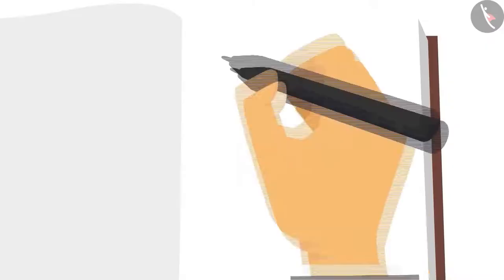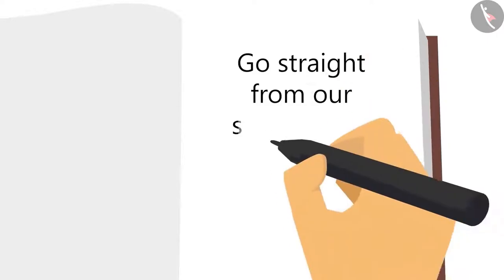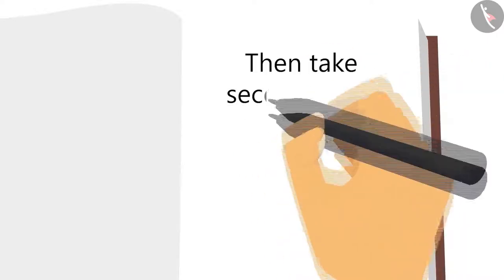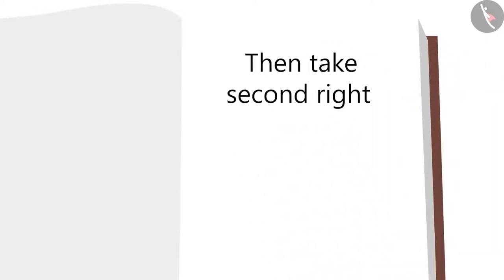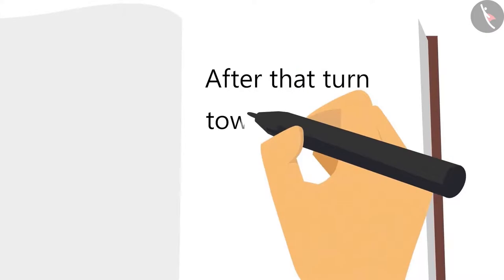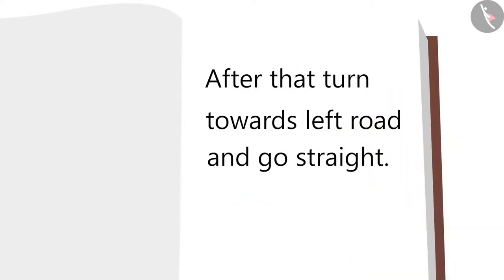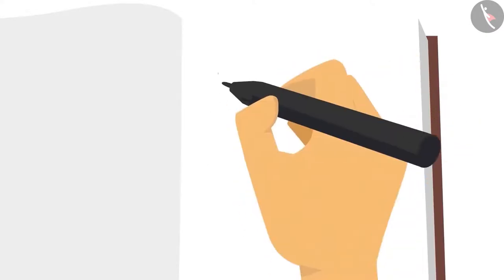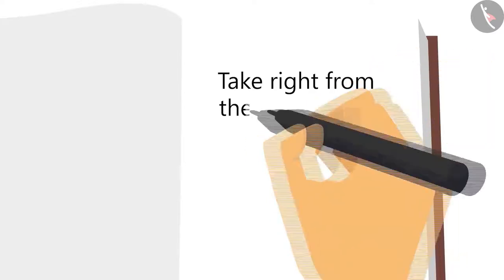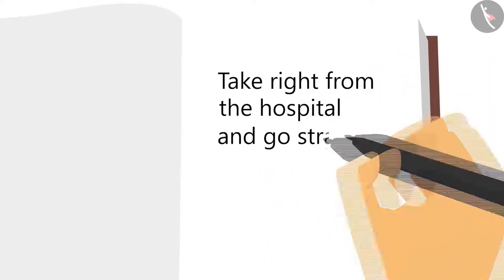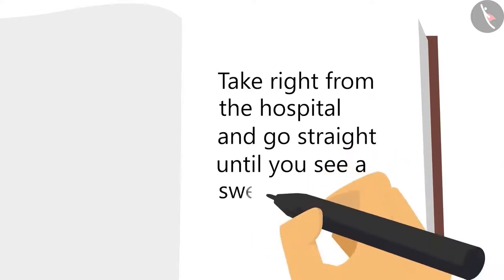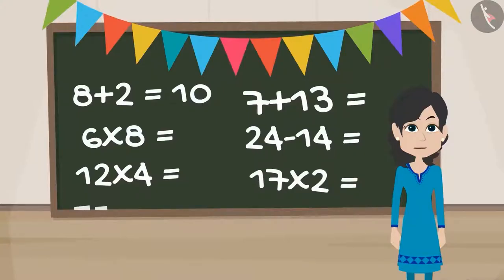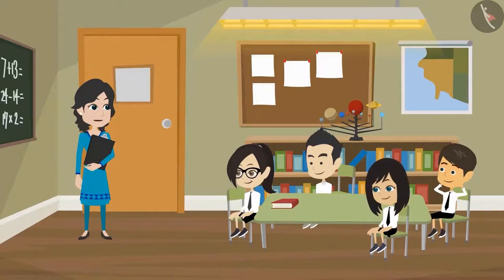Okay madam. Go straight as you exit from our school gate. Then take the second right. After that, turn left and go straight. You will see a hospital. Take right from the hospital and go straight until you see a sweet shop. My home is right in front of it. Now I am leaving — be there at 6 o'clock.